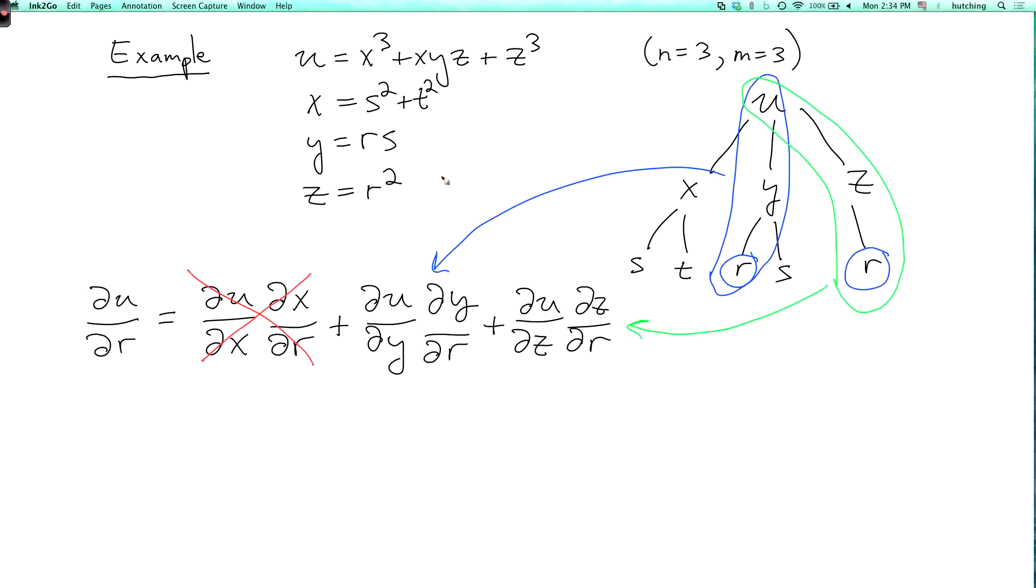So I'm not sure which way to remember this is most helpful. Anyway, we can now calculate this. So partial u partial y is xz, and partial y partial r is s. And partial u partial z is xy plus 3z squared, and partial z partial r is 2r.